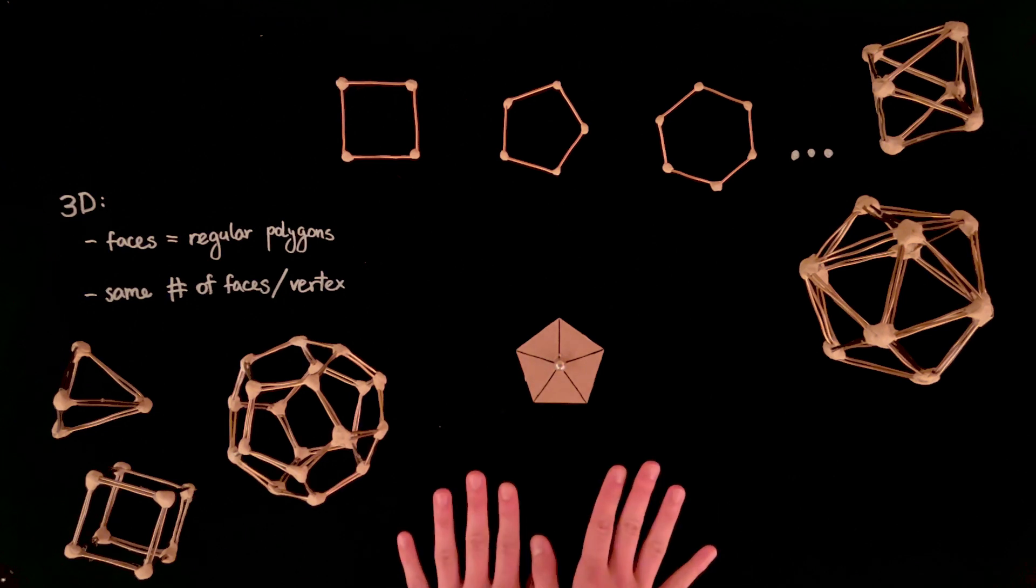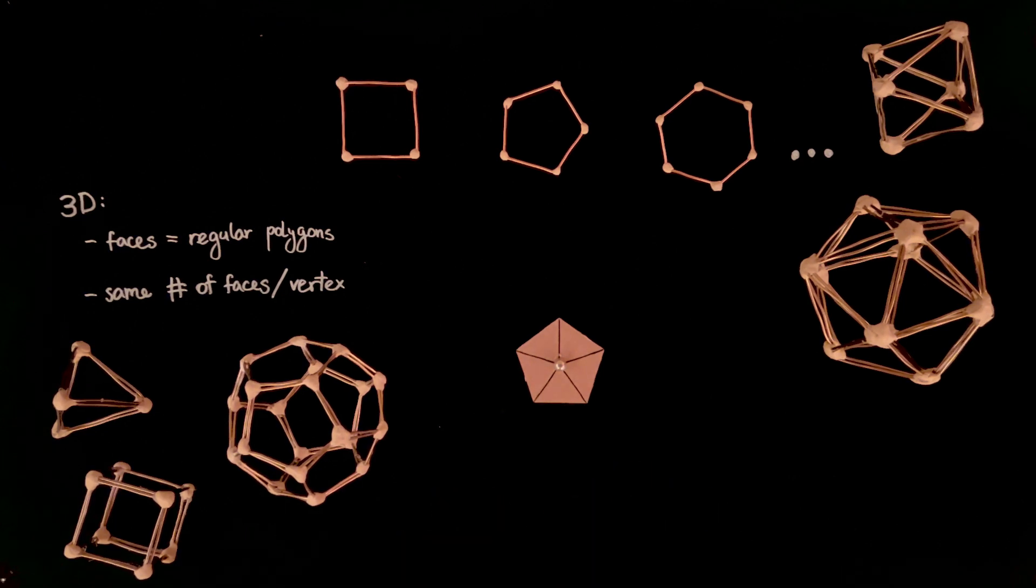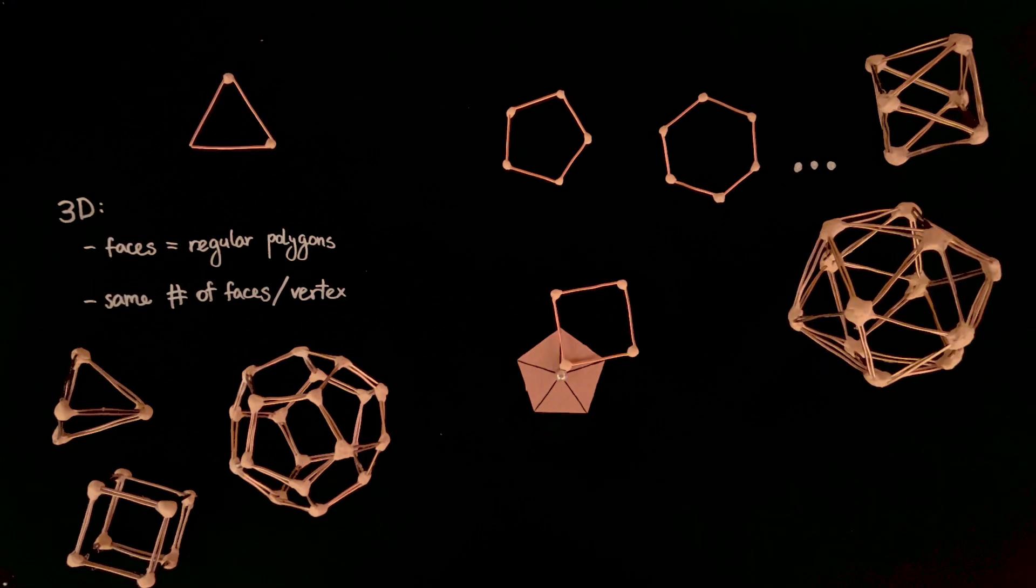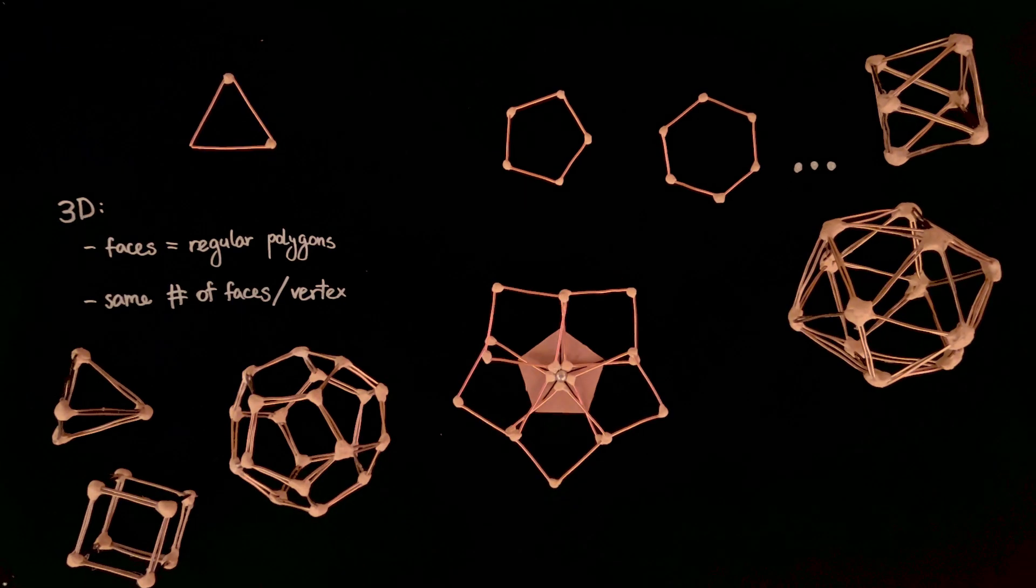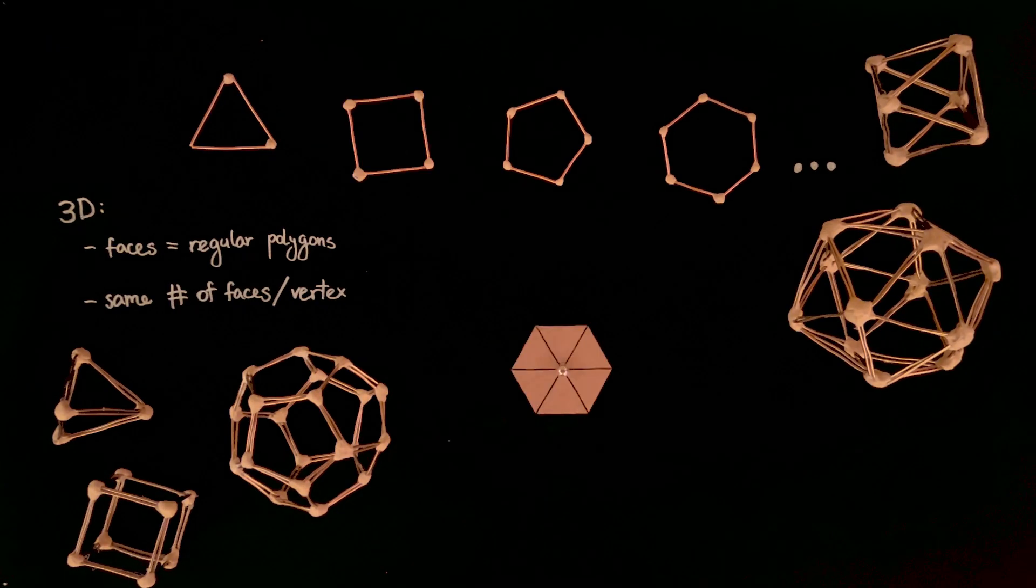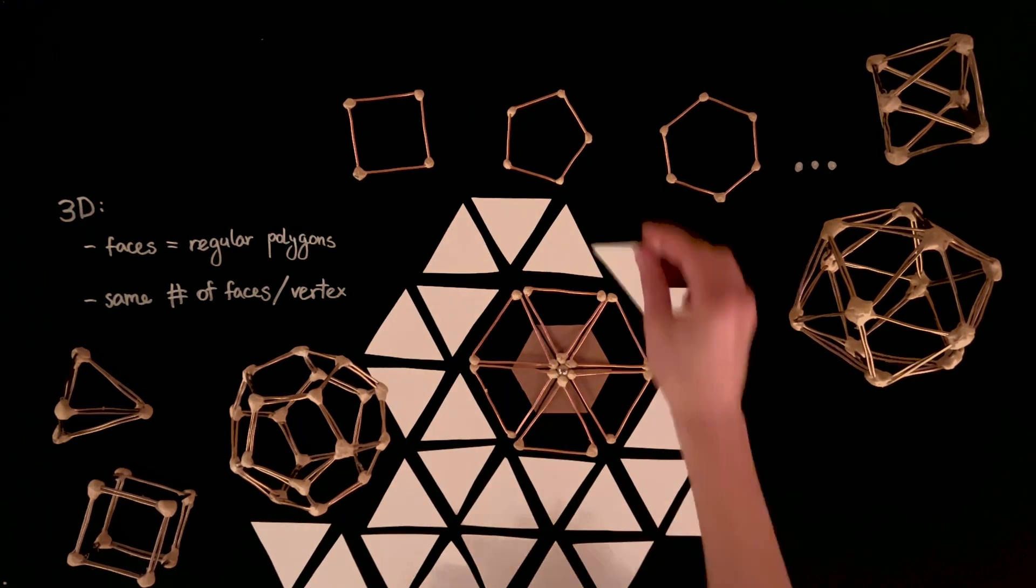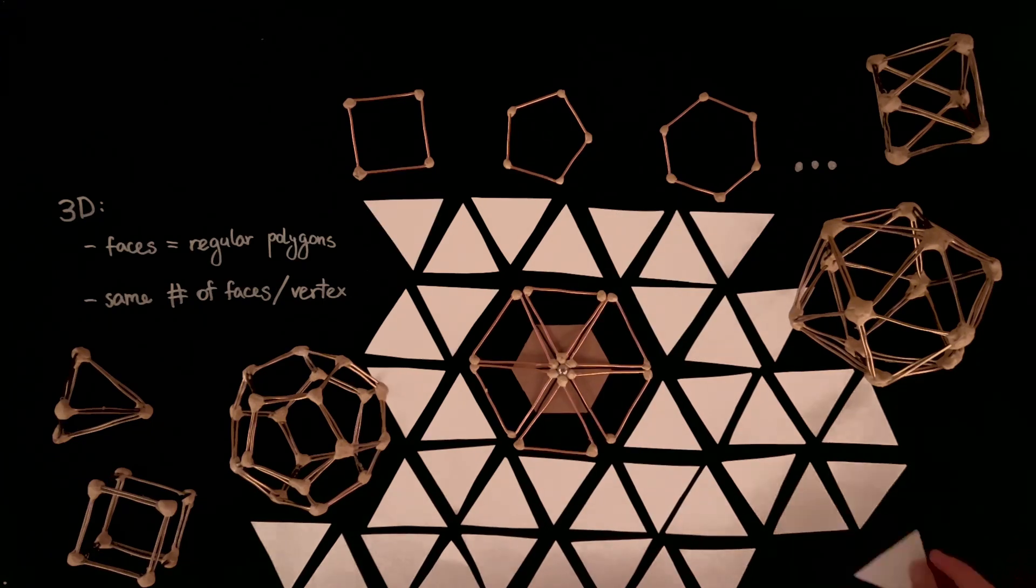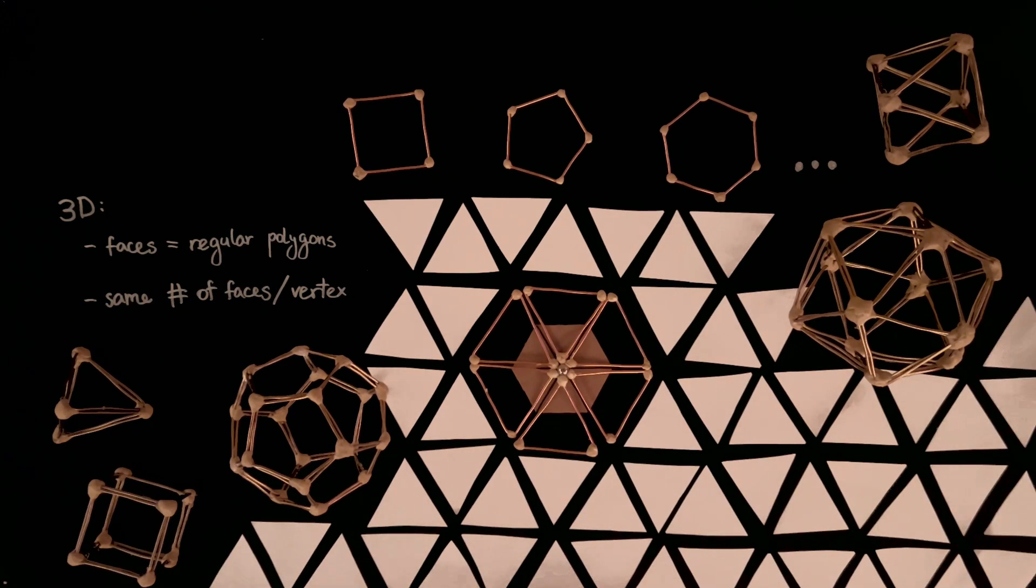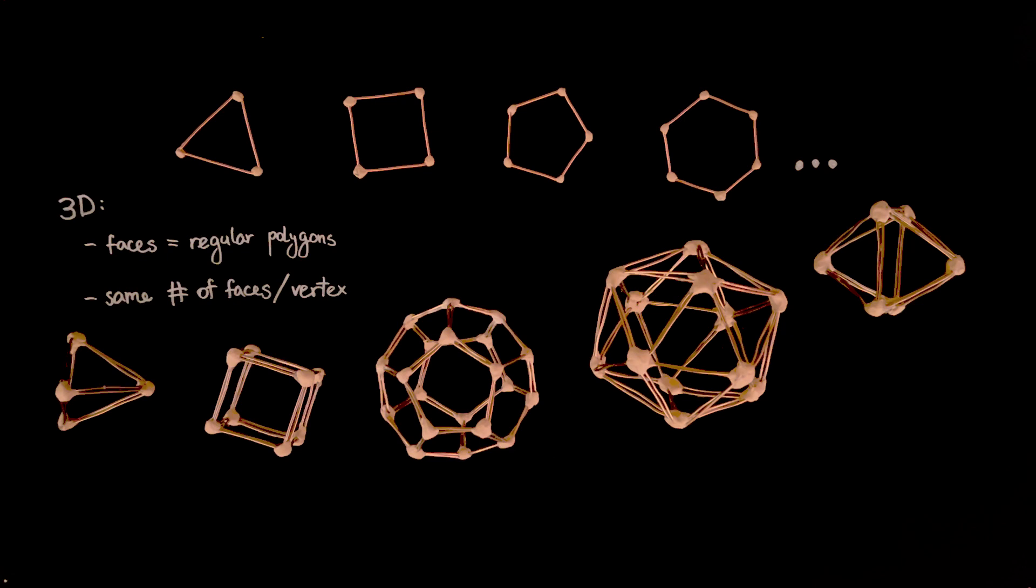Hold on to this insight. It might carry over to the fourth dimension. Returning to our casework, squares and polygons with more sides don't fit around a pentagon, so we move on to a hexagonal template. Six triangles are a perfect fit, forming the last of the three regular tilings. At this point, increasing the number of sides of either the base or the faces is bound to create overlaps, so we've found all the 3D platonic solids.